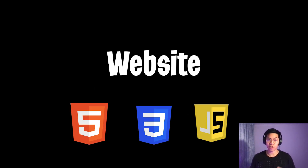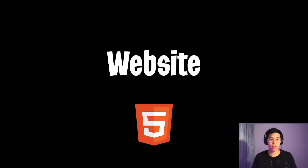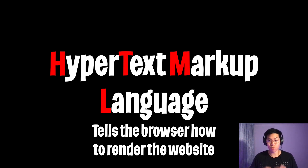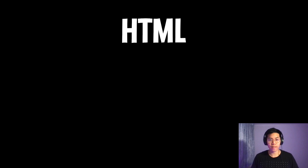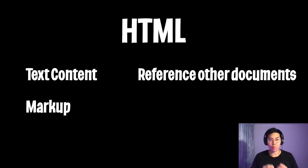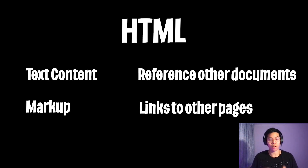In general, a website consists of these files: HTML, CSS, and JavaScript. For today's lesson, we're going to focus on HTML, which stands for Hypertext Markup Language. This file is used to tell your browser how to render the website. It contains text content, which is what you see, markup which is how the page is styled, and it can reference other documents like images or videos. And lastly, it also links to other pages.